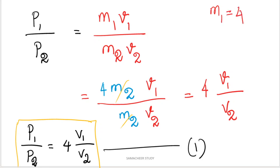It is given that mass of the truck is 4 times that of the bike, so M1 equals 4M2. Substituting all values: P1/P2 = 4M2 × V1 divided by M2 × V2. M2 cancels in numerator and denominator, giving us 4V1 by V2.